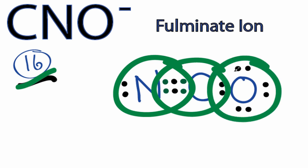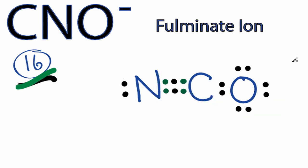Oxygen still has eight, and we're using 16 valence electrons. That makes this a valid Lewis structure for CNO minus.